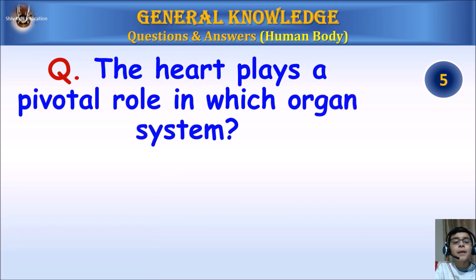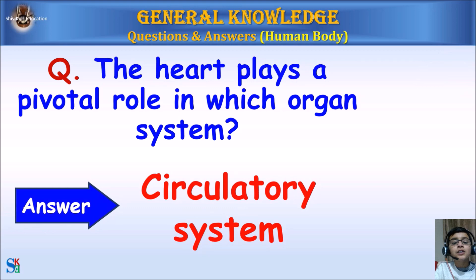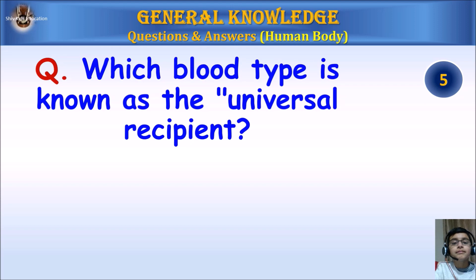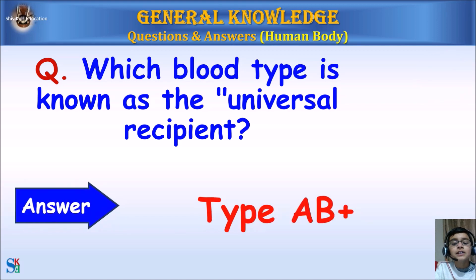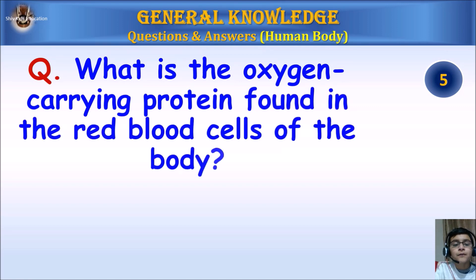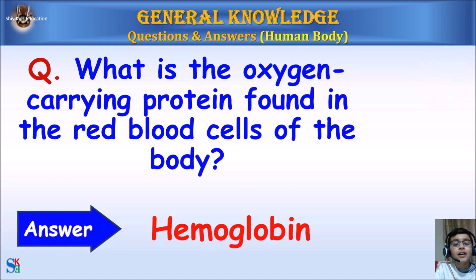The heart plays a pivotal role in which organ system? Answer: The circulatory system. Which blood type is known as the universal recipient? Answer: Type AB positive. What is the oxygen-carrying protein found in the red blood cells of the body? Answer: Hemoglobin.